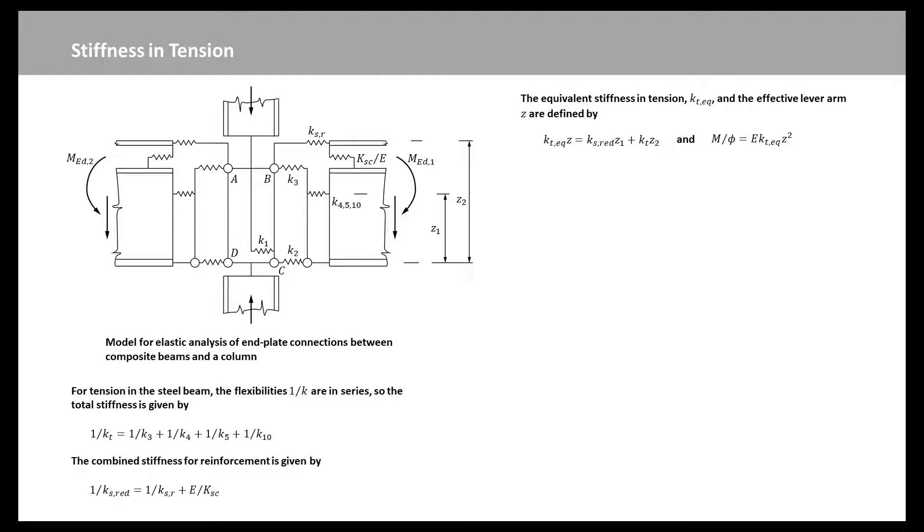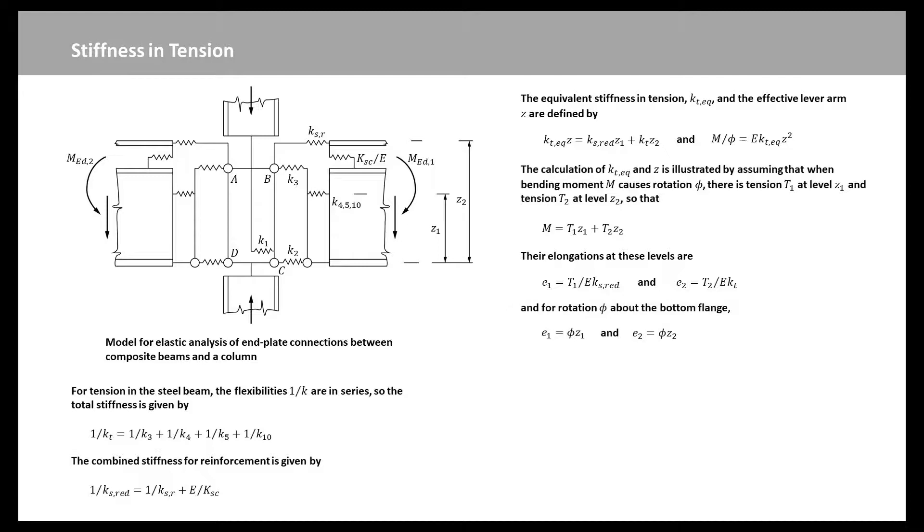The equivalent stiffness in tension, KTEQ, and the effective lever arm Z are defined by this equation. The calculation of KTEQ and Z is illustrated by assuming that when bending moment M causes rotation phi, there is tension T1 at level Z1 and tension T2 at level Z2, so that we have this M equation. The elongations at these levels are shown here. And for rotation phi above the bottom flange, so that we obtain these equations. The elimination of E1, E2, T1, and T2 from the last 5 equations gives this expression. The previous equations can be solved for Z and KTEQ, given for the effective lever arm and for the equivalent stiffness in tension.